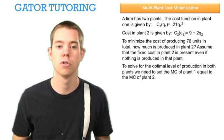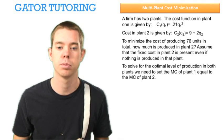To solve for the optimal level of production in both plants, we need to set the marginal cost of plant 1 equal to the marginal cost of plant 2.